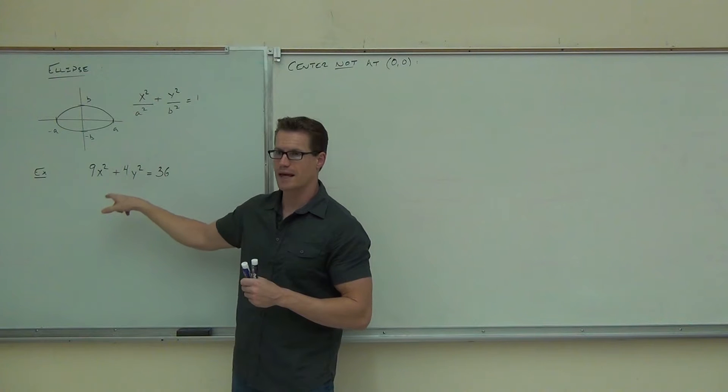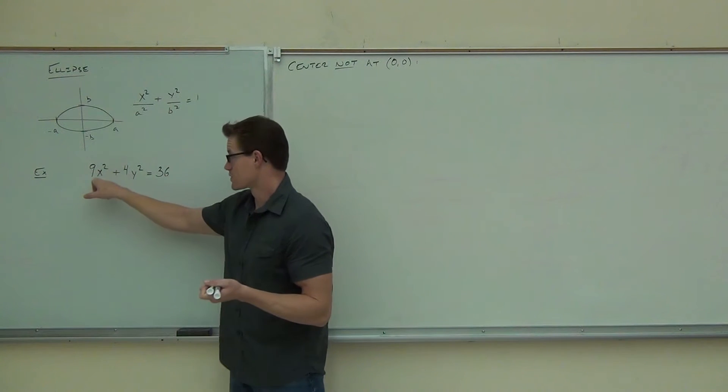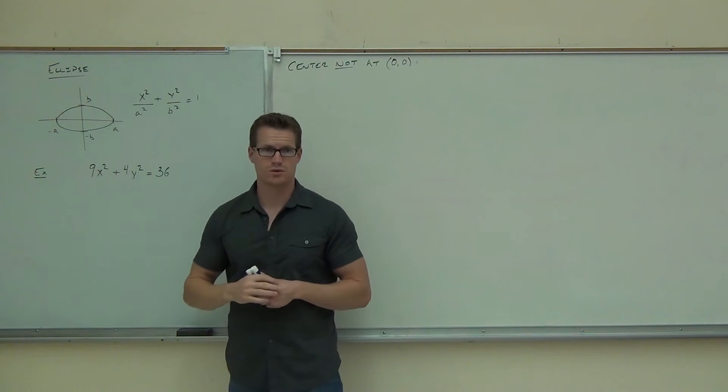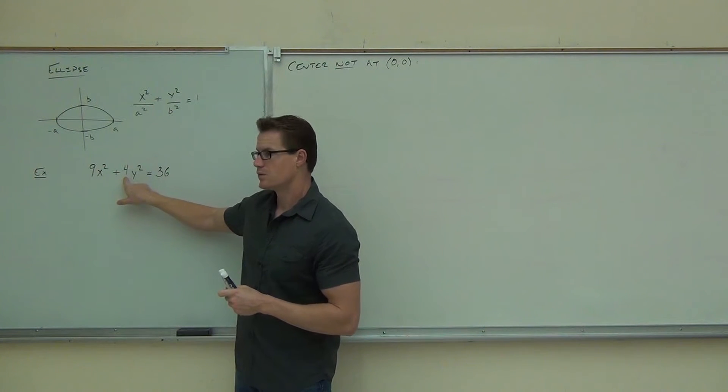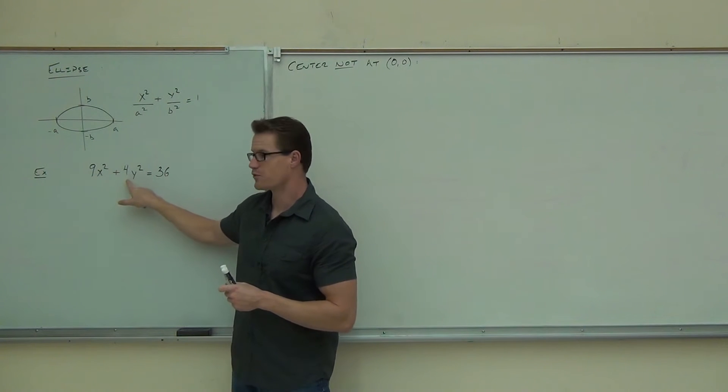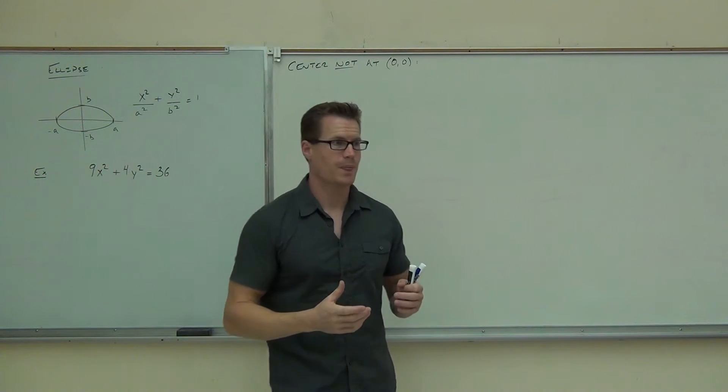It's either a circle or an ellipse because circles and ellipses both have an x squared and a y squared and a plus. Is this thing a circle or an ellipse? What do you think? Why is it not a circle? Different numbers. If this had been a nine, what shape would it be? Circle. If the numbers are the same, it's a circle.